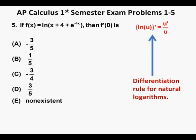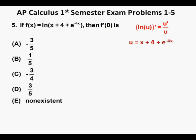Now, according to this rule, we have u equal to x plus 4 plus e to the power of negative 4x.